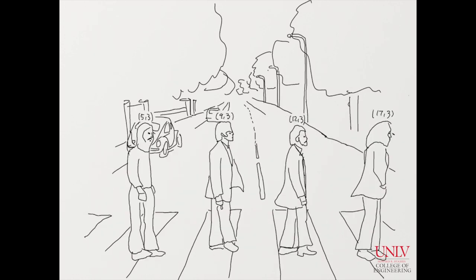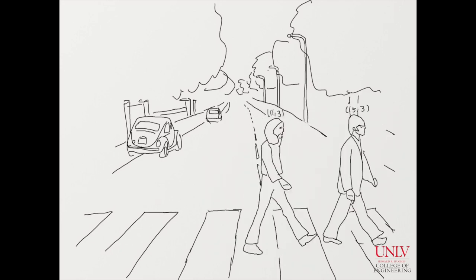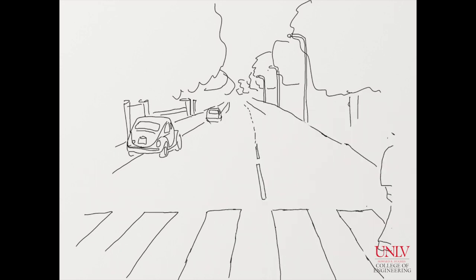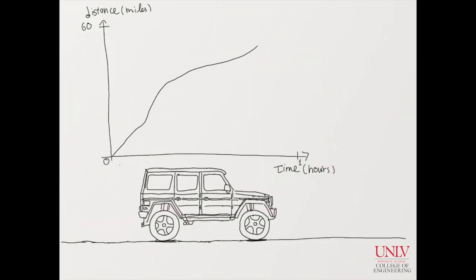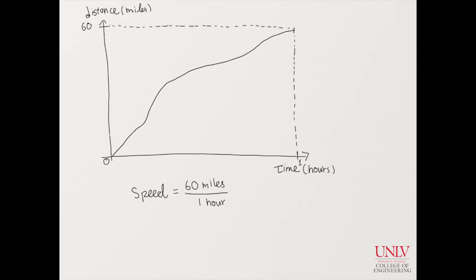Cartesian system also brought us the concept of instantaneous rate of change. Suppose a car went 60 miles per hour. It means that the average speed, total distance divided by total time, was 60. However, to calculate the speed at a certain point, we narrow down the gap between two reference points infinitesimally.